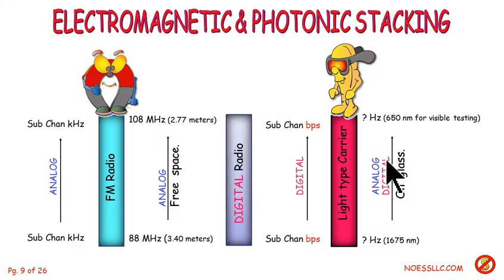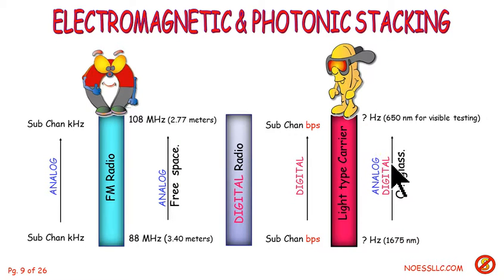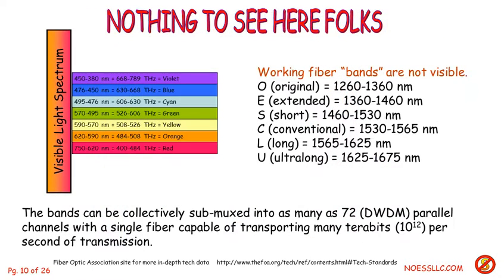As soon as I start using different — I'll call them colors at this point, but they're not colors because you can't see them — if I stack frequencies or wavelengths up and send them in parallel, each one of which is pulsed digitally, then I have a combination: I have analog and digital over here in wavelength division multiplexing.